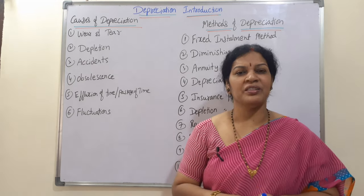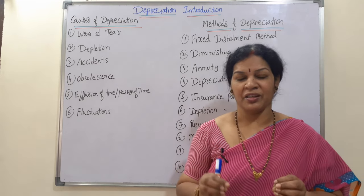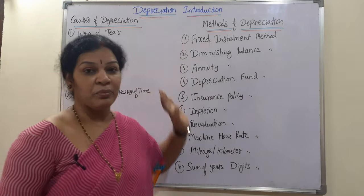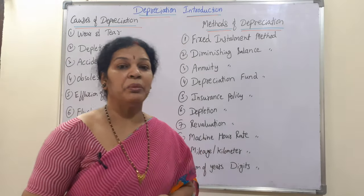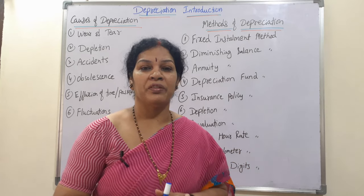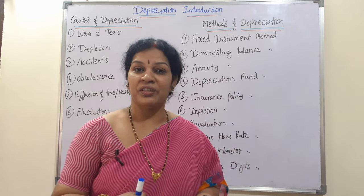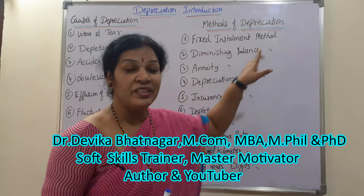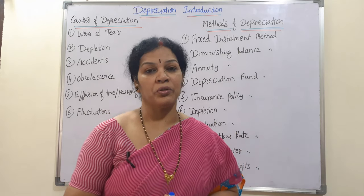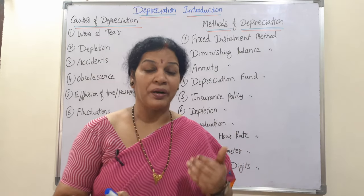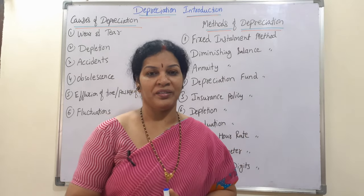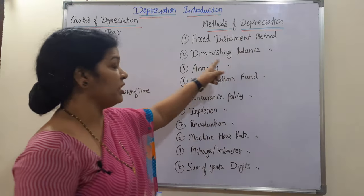There are a total of ten depreciation methods. The first one is the fixed installment method, also called the straight line method. In this method, once you calculate the depreciation amount, it remains consistent every year — it does not change. For example, on a one lakh asset at 10 percent, depreciation is ten thousand — and every year you provide ten thousand only.